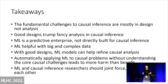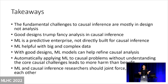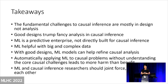So the takeaway: the fundamental challenges of causal inference are mostly in the design stage, not the analysis stage. Good designs trump fancy analysis in causal inference. Machine learning is a predictive enterprise — it's not directly a causal inference enterprise. Machine learning, especially deep learning, is extremely helpful with big and complex data. Causal inference hasn't been used much for text data or imaging data, and in those fields, merging machine learning methods will help a lot, because traditional regression cannot do the job. So given good designs, machine learning models can really help refine the analysis and extract information from big and complex data.